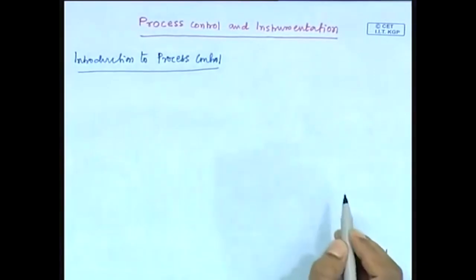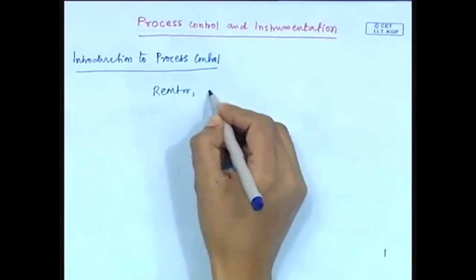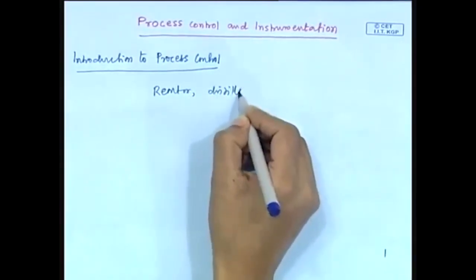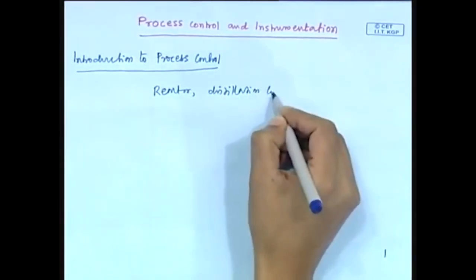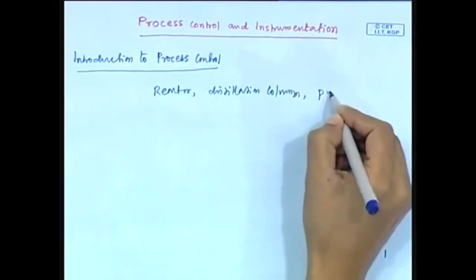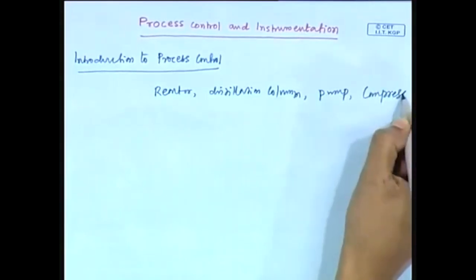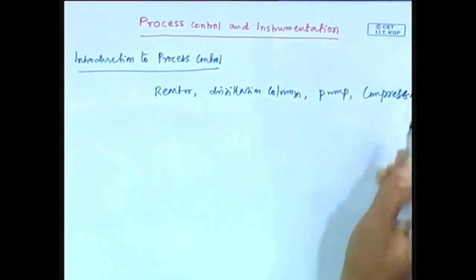In chemical engineering, we have a number of chemical units. For example, reactors, distillation columns, pumps, compressors, et cetera. These are the different units which are extensively used in chemical engineering.